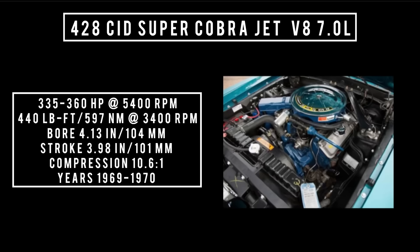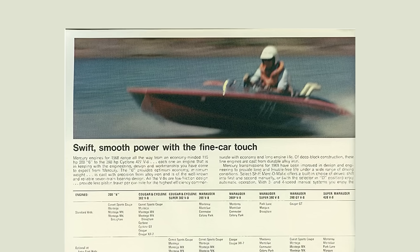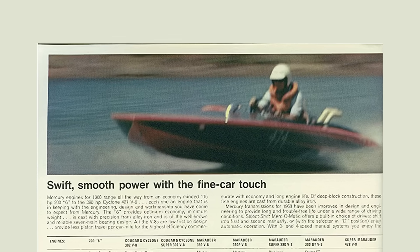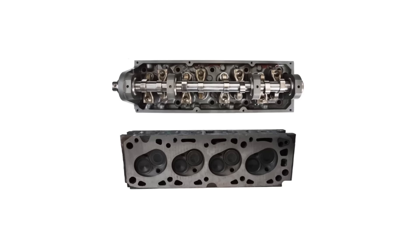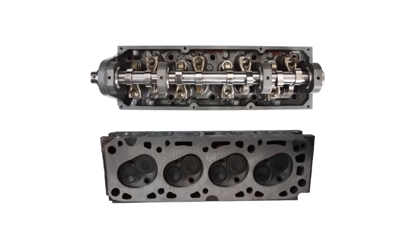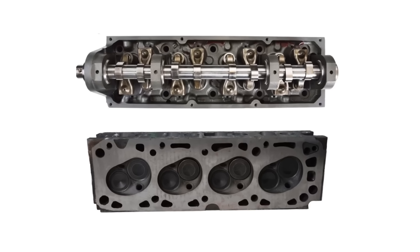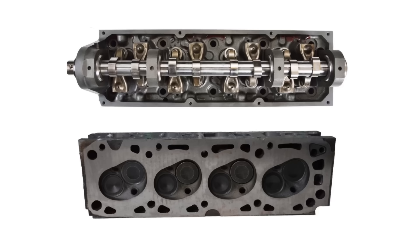In the mid-1970s, Ford was working on a replacement for the FE engine because the FE was 20 years old at that point. The 385 series would replace the FE engine, with displacements of 370, 429, and 460. But that is an engine episode for another day.